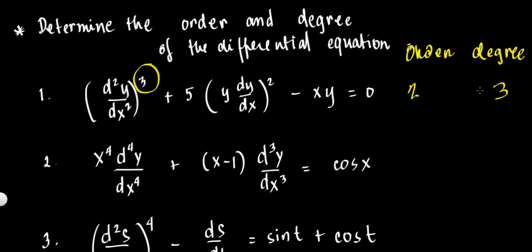Example 2: We have x⁴ times the 4th derivative of y with respect to x, plus (x−1) times the 3rd derivative of y with respect to x, equals cosine x. The highest ordered derivative is d⁴y/dx⁴, so the order of the differential equation is 4. The 4th derivative is not raised to any particular power, so the degree is 1.